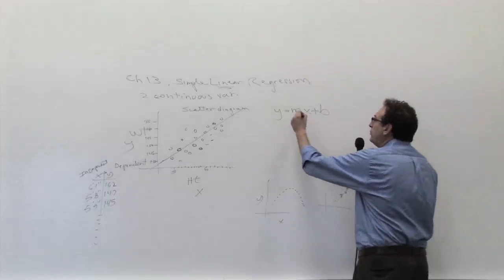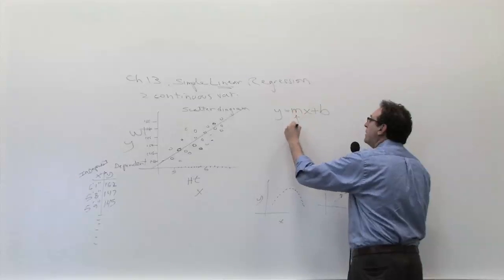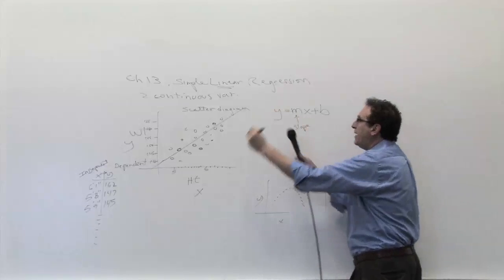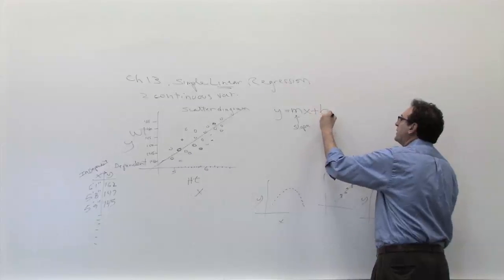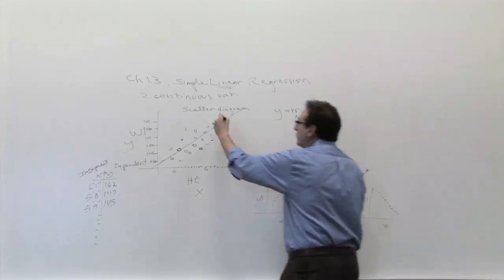Now, of course, most of you probably remember the m is called the slope, which is basically the angle of the line. And the b is called the y-intercept, or simply the intercept, which tells you where it cuts across the y-axis.